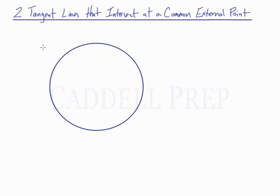In this lesson, we're going to take a look at what happens when two tangent lines intersect at a common external point.